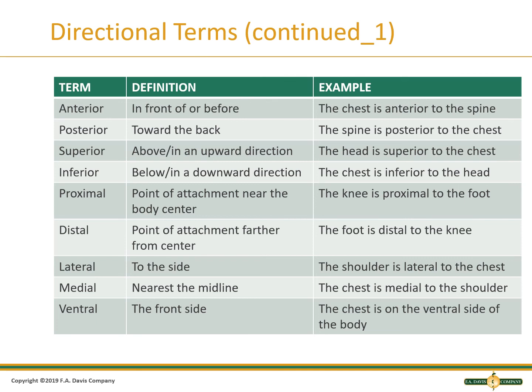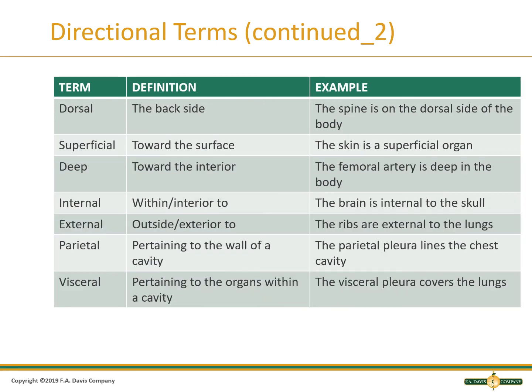Ventral means the front — the chest is on the ventral side of the body. Therefore, ventral and anterior mean the same thing. Dorsal means the back — the spine is on the dorsal side of the body — meaning dorsal means the same as posterior. Superficial means towards the surface — the skin is a superficial organ. Deep means towards the interior — the femoral artery is deep in the body.